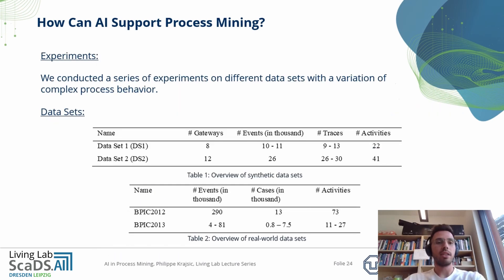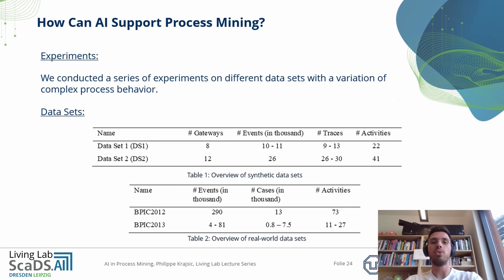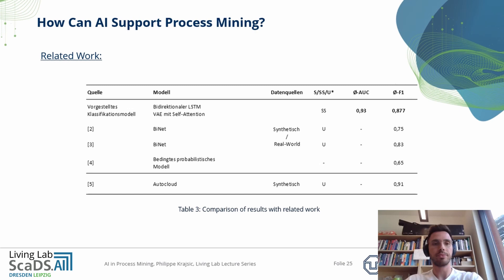We conducted an experiment using four different datasets: two synthetic datasets generated by the PLG2 tool — a multi-perspective process randomization tool — and two real-world datasets provided by the Business Process Intelligence Challenge, about a Dutch hospital process and the incident management of Volvo IT Belgium. The results obtained in comparison to the most relevant related work are pretty good — we could increase the F1 score for the anomaly detection task. One approach on the bottom has a higher F1 score, but it only works with synthetic data, which tends to be not as complex as real-world data.